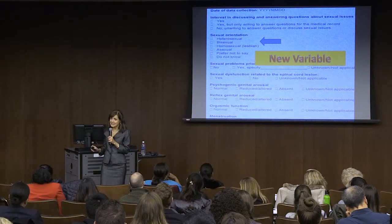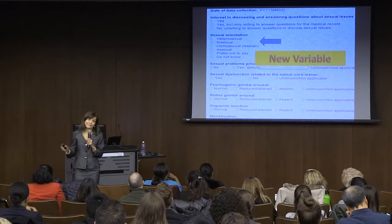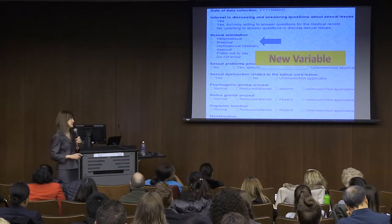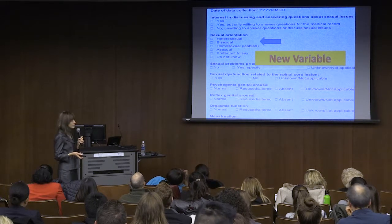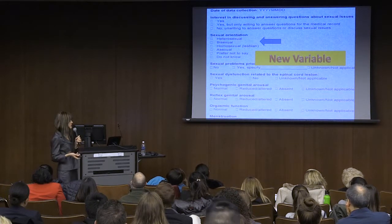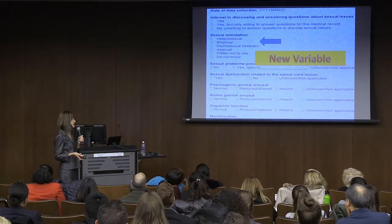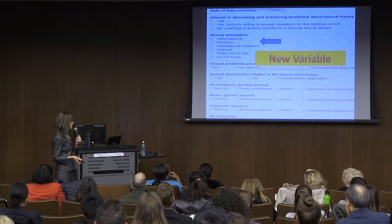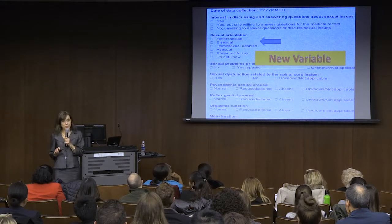After much discussion, we came up with the orientation variables of heterosexual, bisexual, homosexual or lesbian, asexual, preferred not to say, and do not know. That's a new variable we didn't have listed previously.